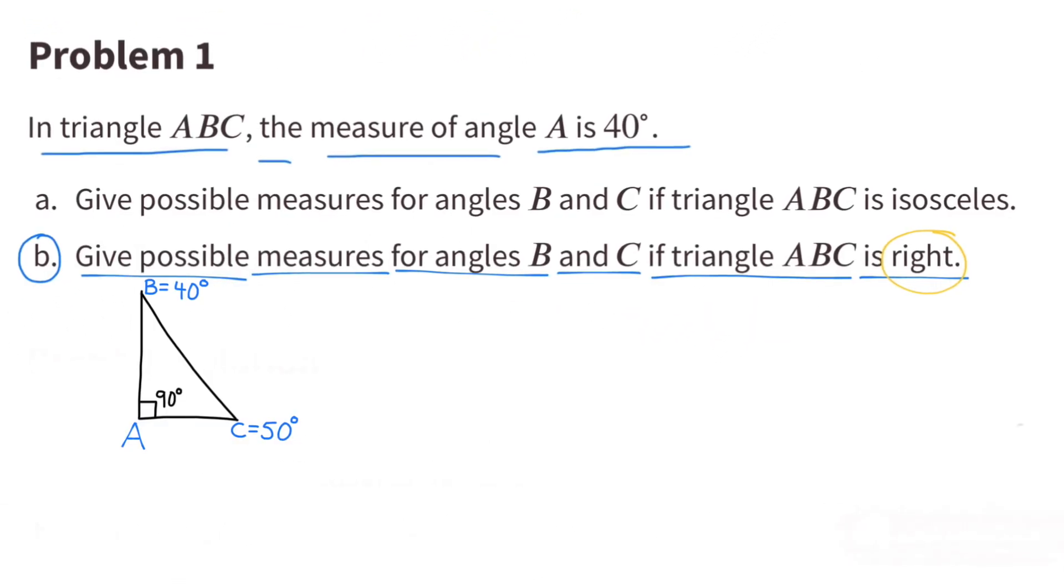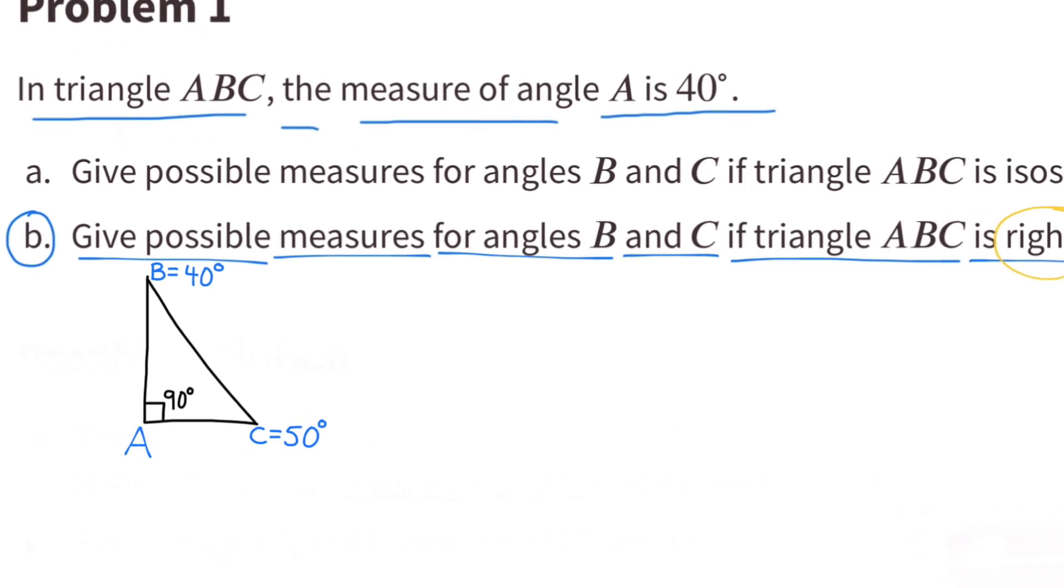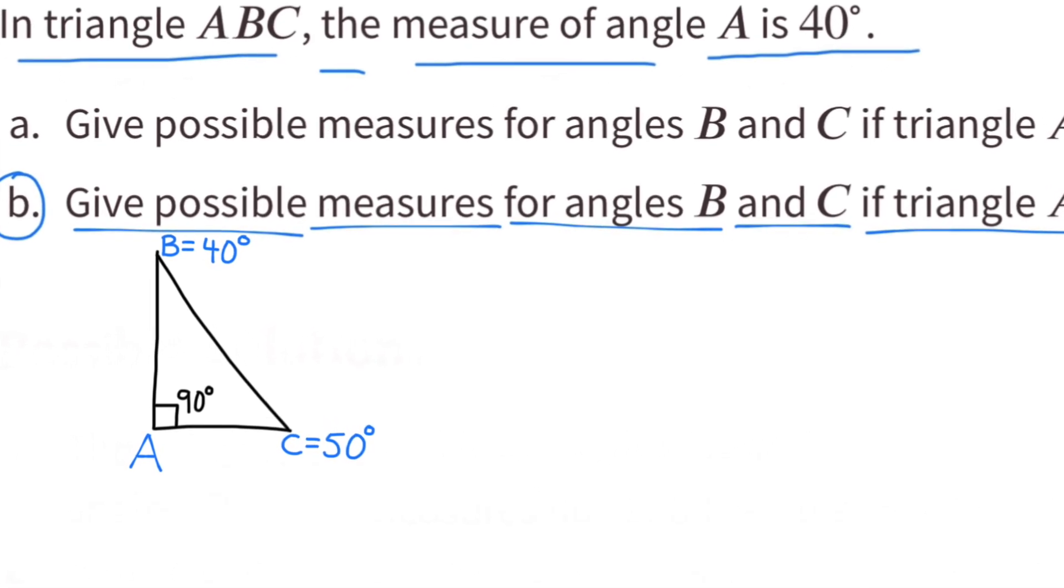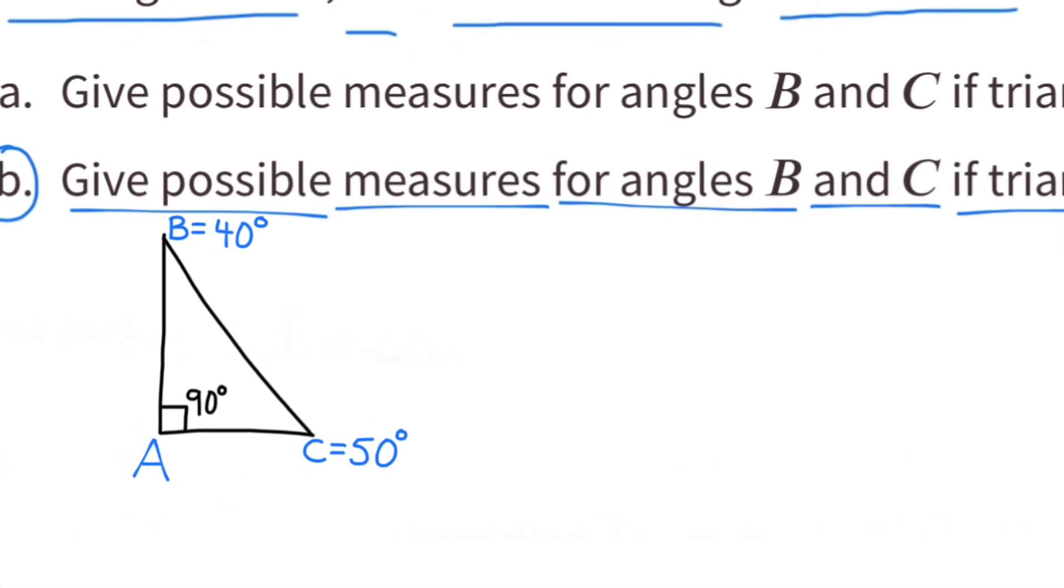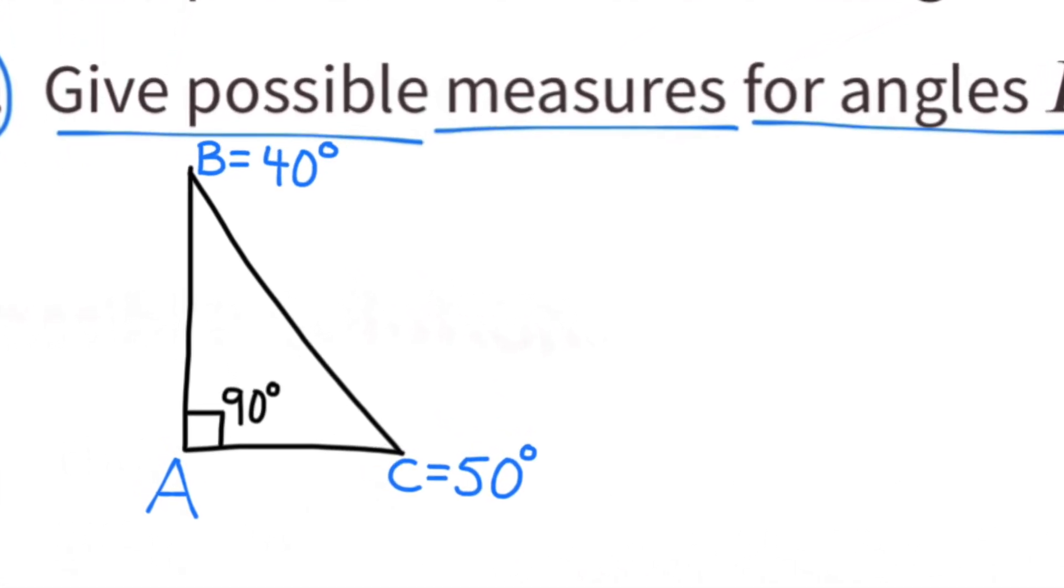The other two angles would be 40 degrees and 50 degrees, because 90 plus 40 plus 50 equals 180. In this case, angle B is smaller than angle C, so angle B would be 40 and angle C would be 50.